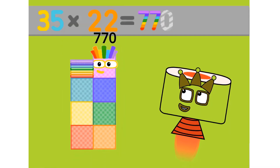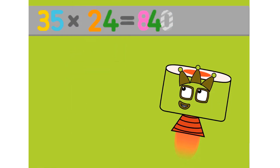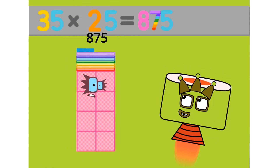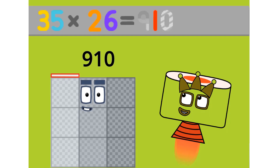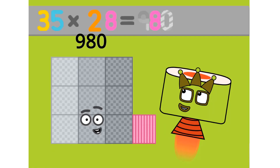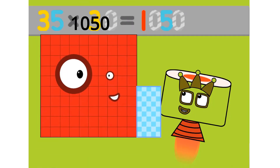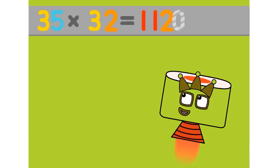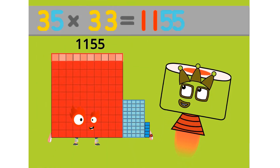35 times 22 equals 770. 35 times 23 equals 805. 35 times 24 equals 840. 35 times 25 equals 875. 35 times 26 equals 910. 35 times 27 equals 945. 35 times 28 equals 980. 35 times 29 equals 1015. 35 times 30 equals 1050. 35 times 31 equals 1085. 35 times 32 equals 1120. 35 times 33 equals 1155.